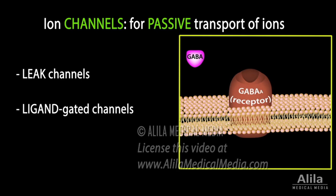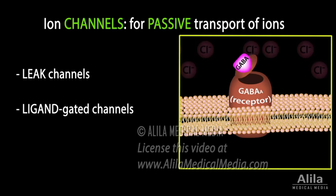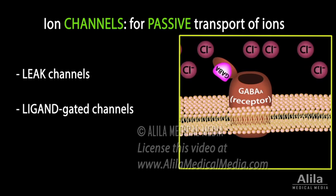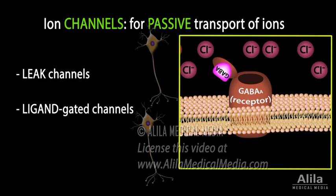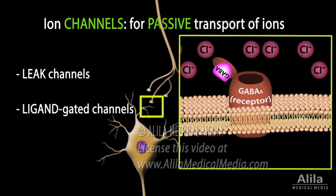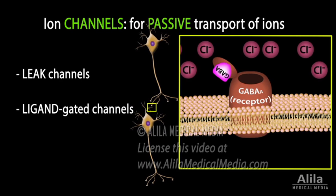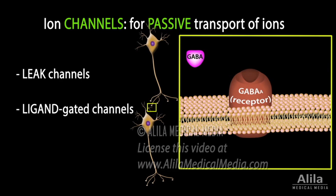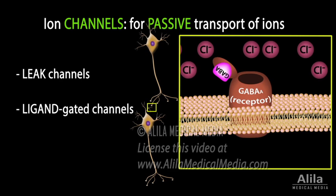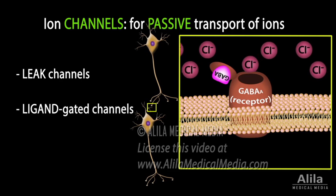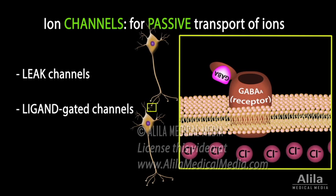Ligand-gated ion channels open upon binding of a ligand. They are most commonly found at synapses, where neurons communicate via chemical messages, or neurotransmitters. An example is the GABA receptor, a chloride channel located on postsynaptic neurons. It opens upon binding to GABA, a neurotransmitter released by the presynaptic neuron, and allows chloride ions to flow into the cell.